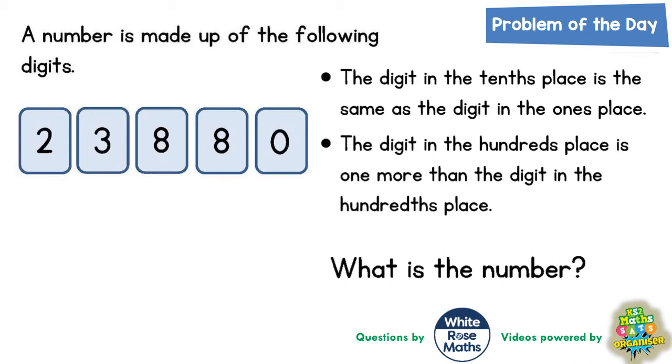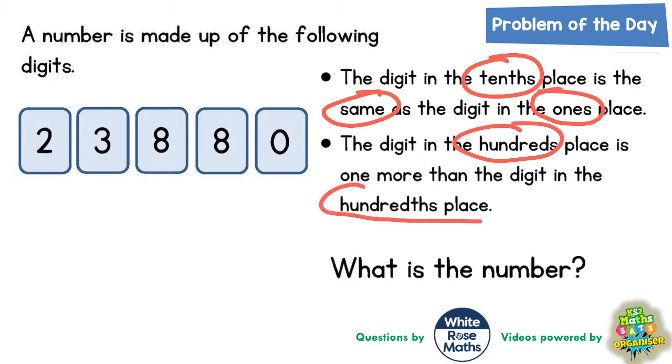The digit in the tenths place is the same as the digit in the ones place. So let's just highlight the place value there and the fact that it's the same. And the digit in the hundreds place is one more than the digit in the hundredths place.